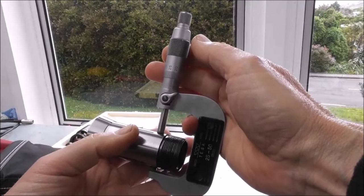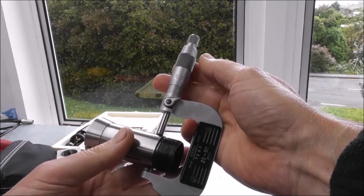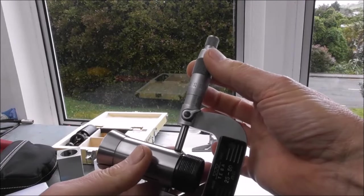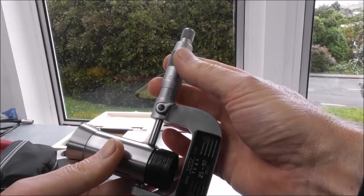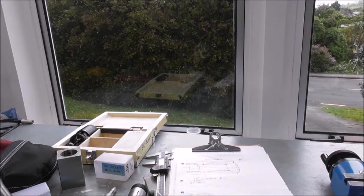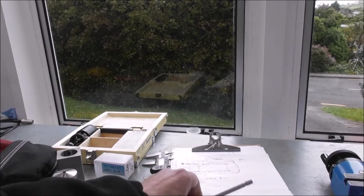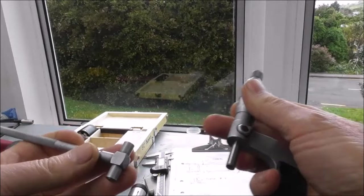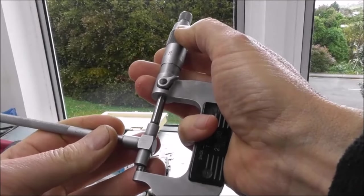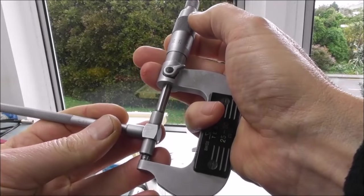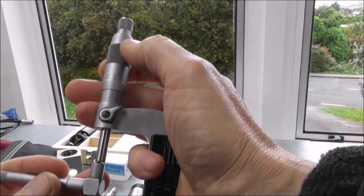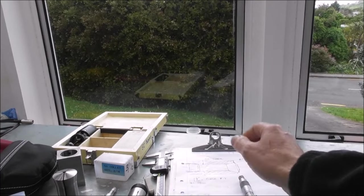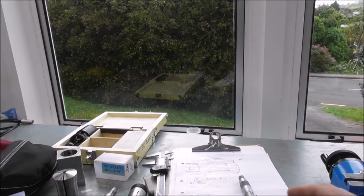So if we measure a 5C collet diameter in that zone we get 31.73mm. And if we measure the bore of that collet spindle, or an example of one, we get 31.755mm. So that's two and a half hundredths clearance - that's one thou clearance.